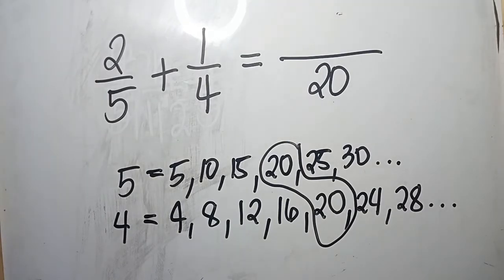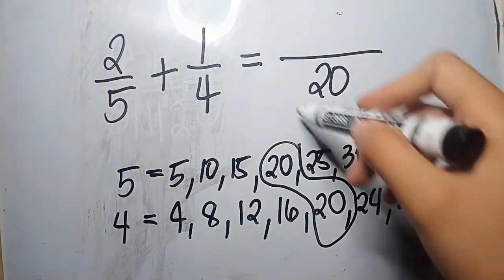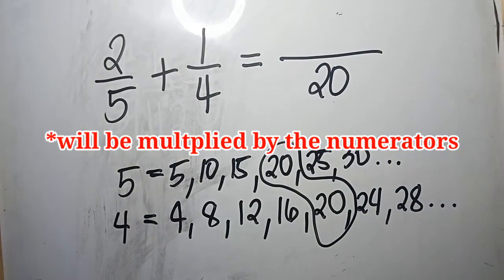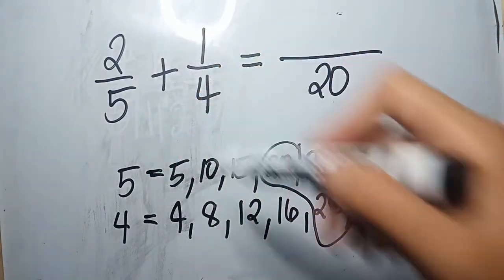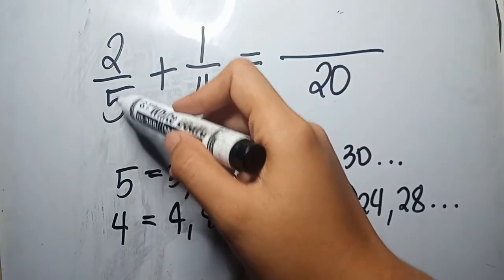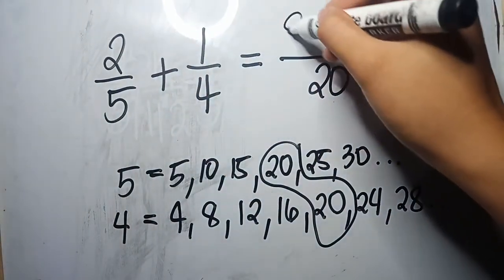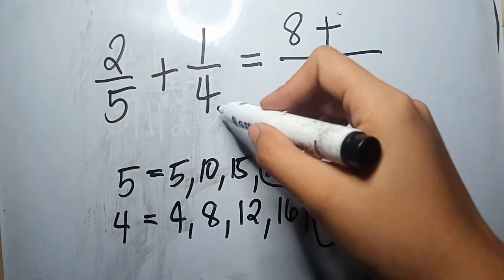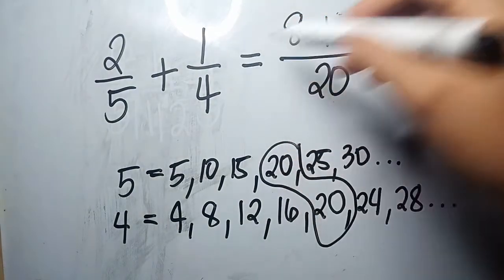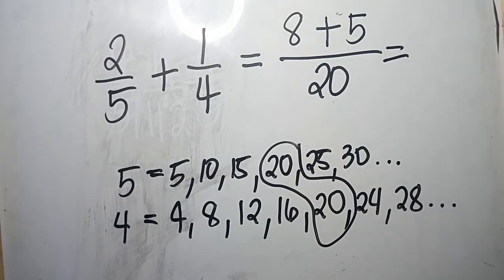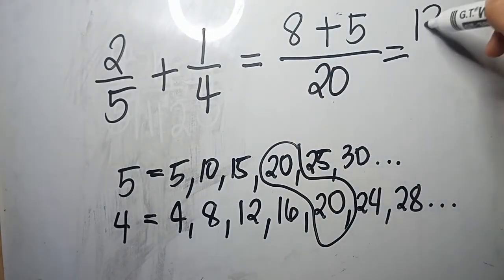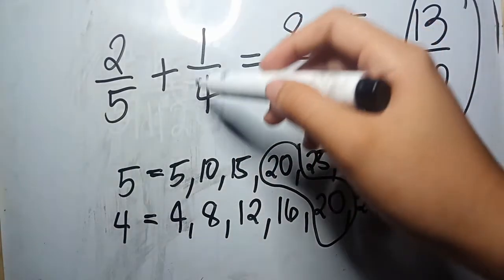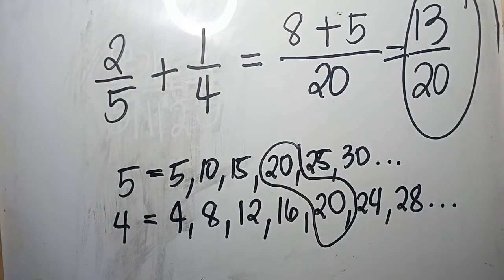The second step is that we are going to divide the LCD by each of the denominators, then the quotient will be multiplied by the numerator. 20 divided by 5 gives us 4; 4 times 2 gives us 8. Copy the operation, which is addition. 20 divided by 4 gives us 5; 5 times 1 gives us 5. Now let's add: 8 plus 5 gives us 13, then copy the LCD, which is 20. Therefore, 2 fifths plus 1 fourth gives us 13 over 20.